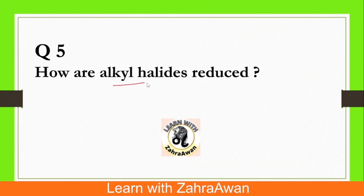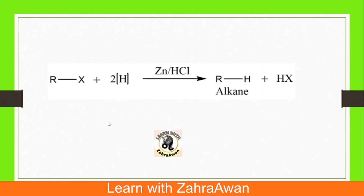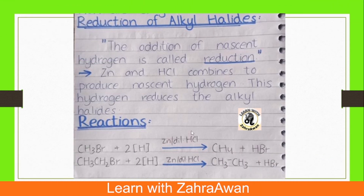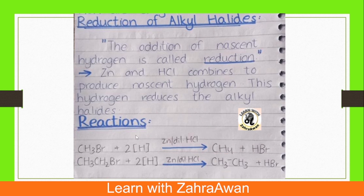Question number 5: How are alkyl halides reduced? In the general process, when we take an alkyl halide and add atomic hydrogen using zinc and HCl, we get the corresponding alkane. Zinc and HCl react together to produce atomic hydrogen, which is very active. This atomic hydrogen reduces the alkyl halide, converting it to an alkane. Alkyl halides can also be converted using lithium reagents.